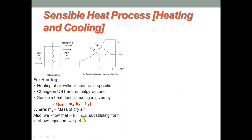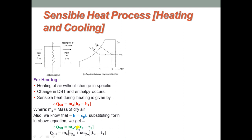We know that H = Cp × T, so substituting for H, sensible heating Q equals ma × Cp × (T2 − T1). This expression can also be written as ma × (Cpa + ω × Cpv) × (T2 − T1) for moist air, while the simpler form applies for dry air, where we do not consider the moisture content of the air.